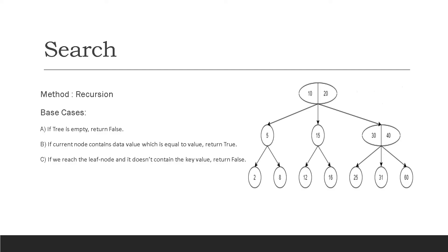As we proceed to the bottom, we have three base cases. If the tree is empty, then we couldn't find the key. If the current node is the key that we are searching for, then we found the key. And if the current node doesn't have the value or is some other value, then we conclude that the value we are searching for does not exist in the 2-3 search tree.